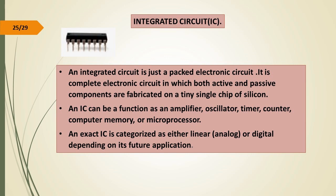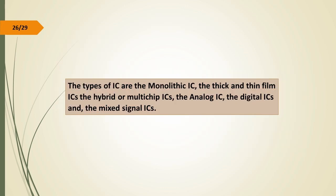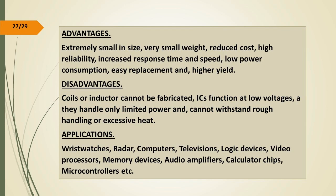Integrated Circuit (IC). An integrated circuit is a complete electronic circuit in which both active and passive components are fabricated on a tiny single chip of silicon. An IC can function as an amplifier, oscillator, timer, counter, computer memory, or microprocessor. ICs are categorized as linear, analog, or digital depending on the application. The types of IC are the monolithic IC, thick film and thin film IC, hybrid or multi-chip IC, analog IC, digital IC, and mixed signal IC.